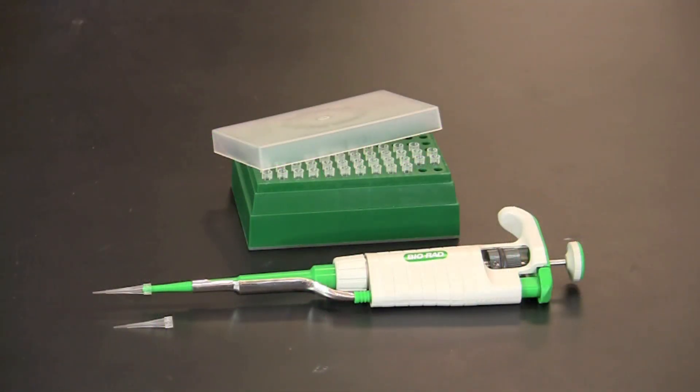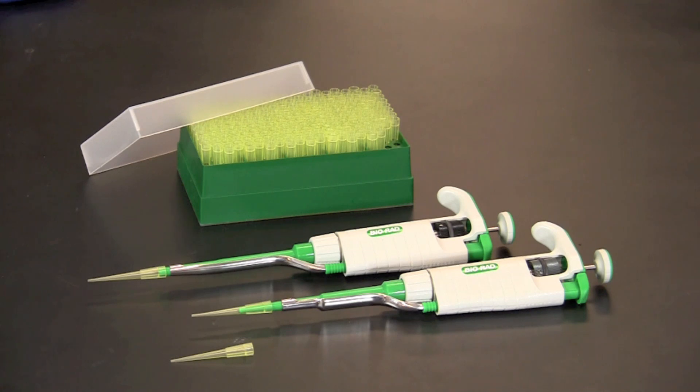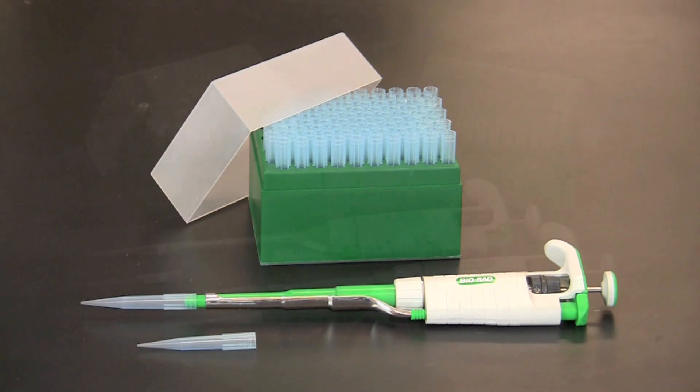The first step in using a micropipette is to make certain you are using the correct size and type of tip for the samples you will be transferring. Tips for general pipetting come in three standard sizes: the 0.5 to 10 microliter, tips that fit either a 2 to 20 microliter or a 20 to 200 microliter pipette, and tips that fit 100 to 1000 microliter pipettes.